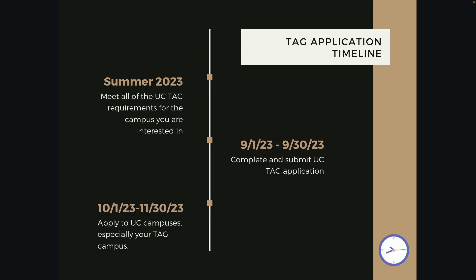Then October 1st through November 30th you will be applying to the campuses you're interested in. This includes all UCs you're planning to apply to, as well as the school that you tagged with.